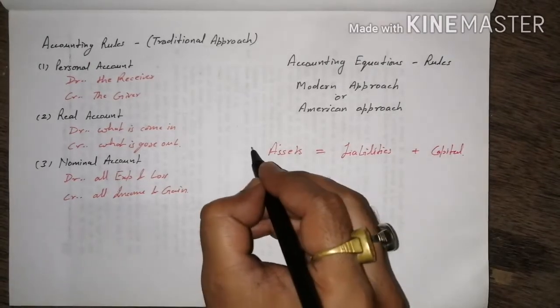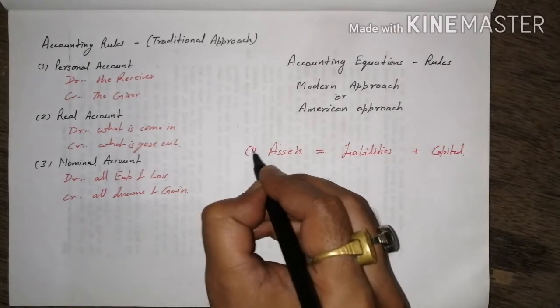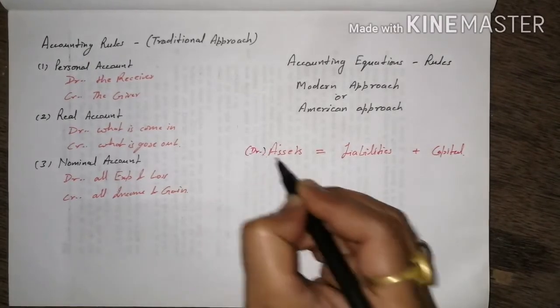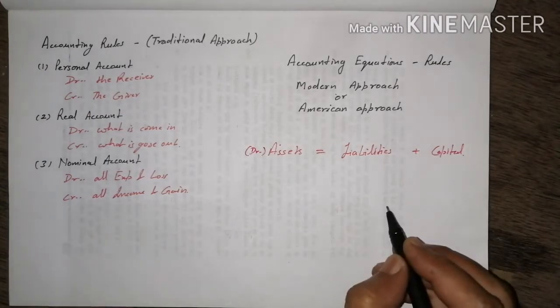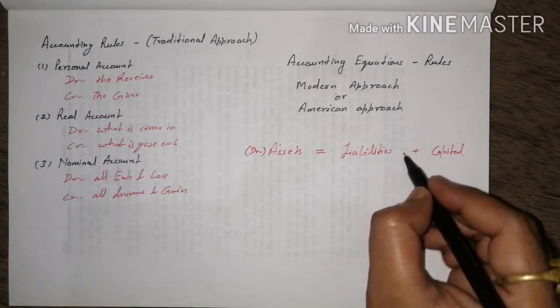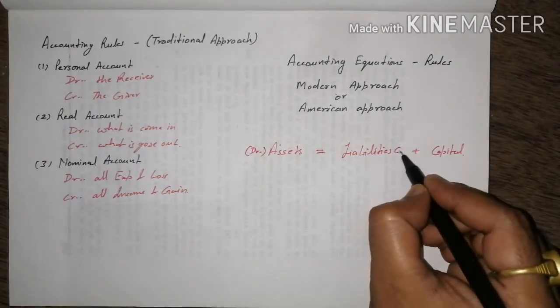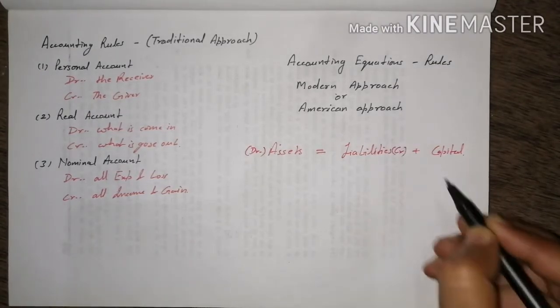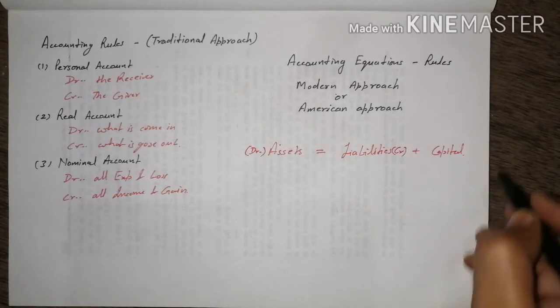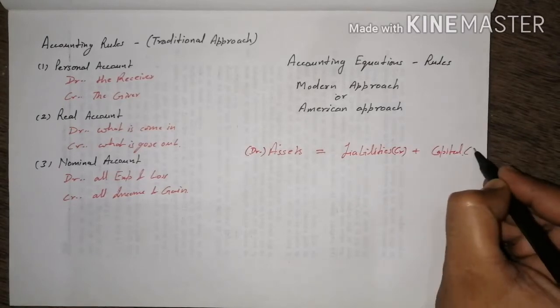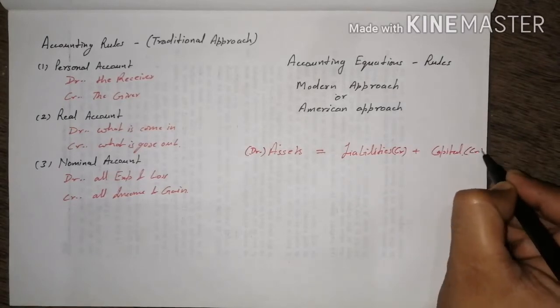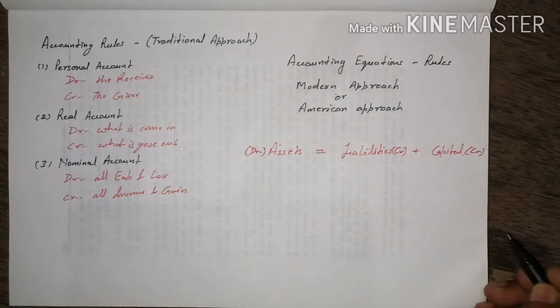Assets always carry a debit balance. Assets ka balance hamesha debit hota hai. Liabilities ka balance credit hota hai, aur capital ka balance bhi credit hota hai.